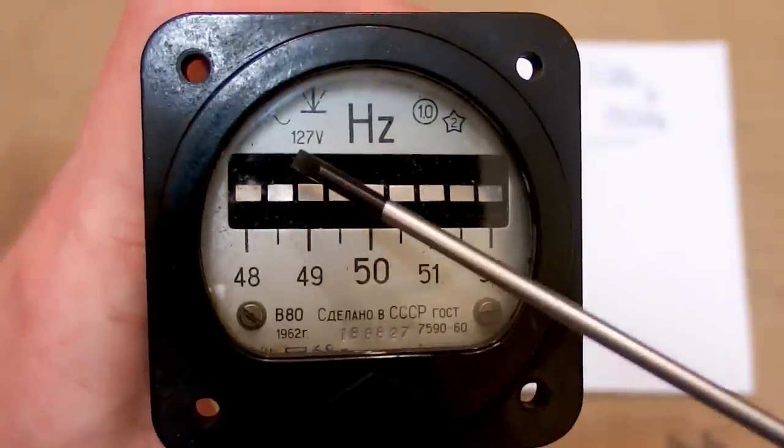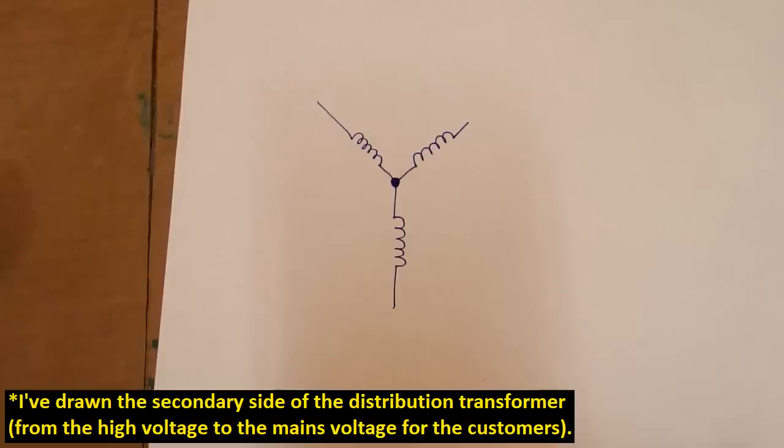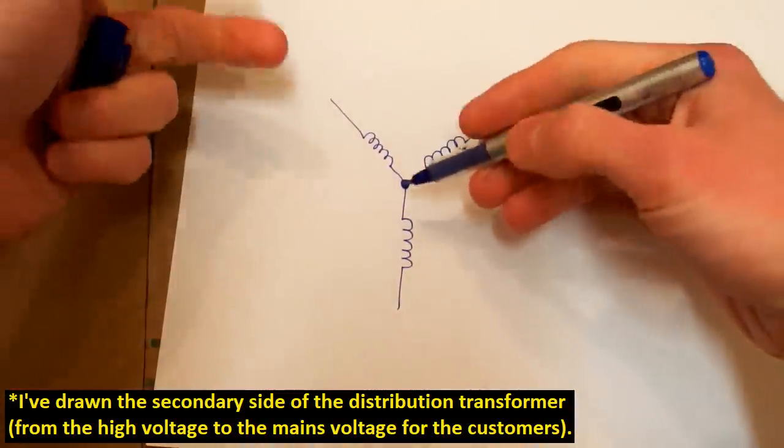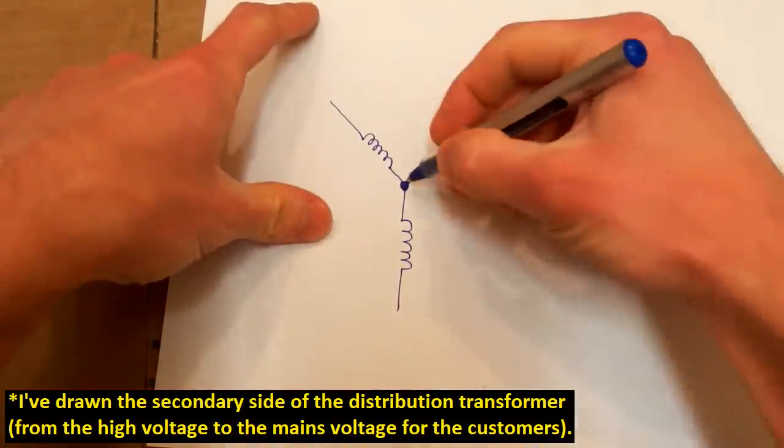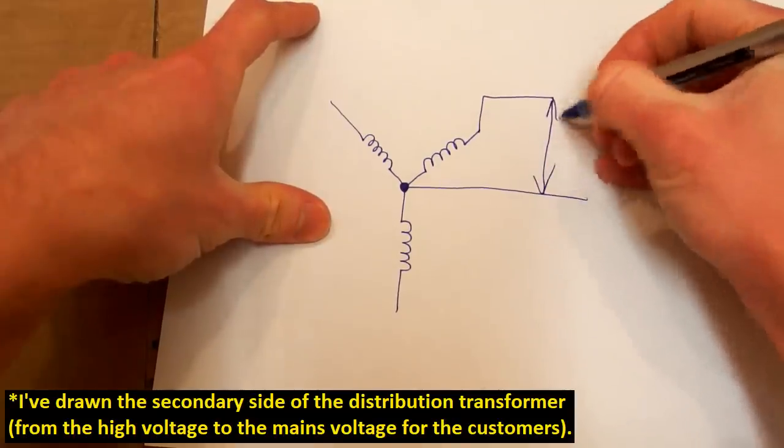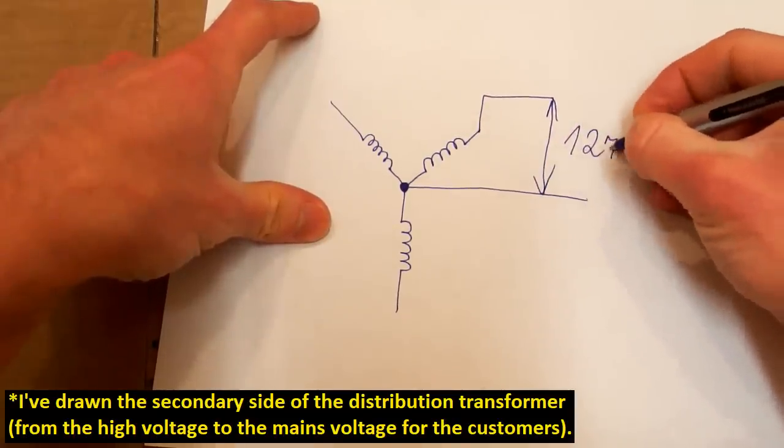And it's designed for 127 volts. And the mains in Soviet Union probably was like this. It was a three-phase mains and the transformer was like this. The voltage from one phase to the center point was 127 volts.